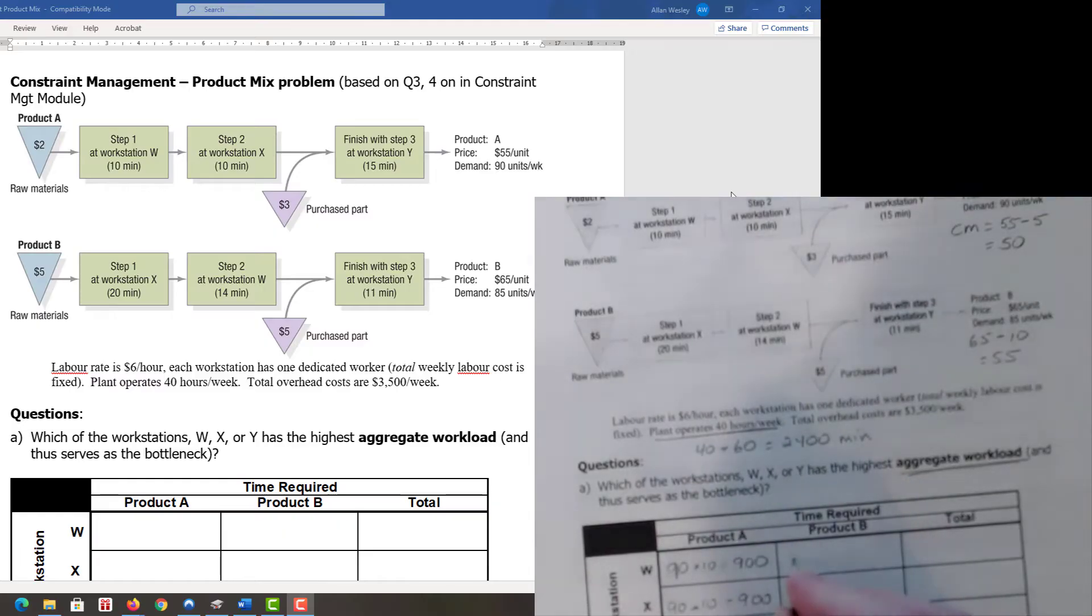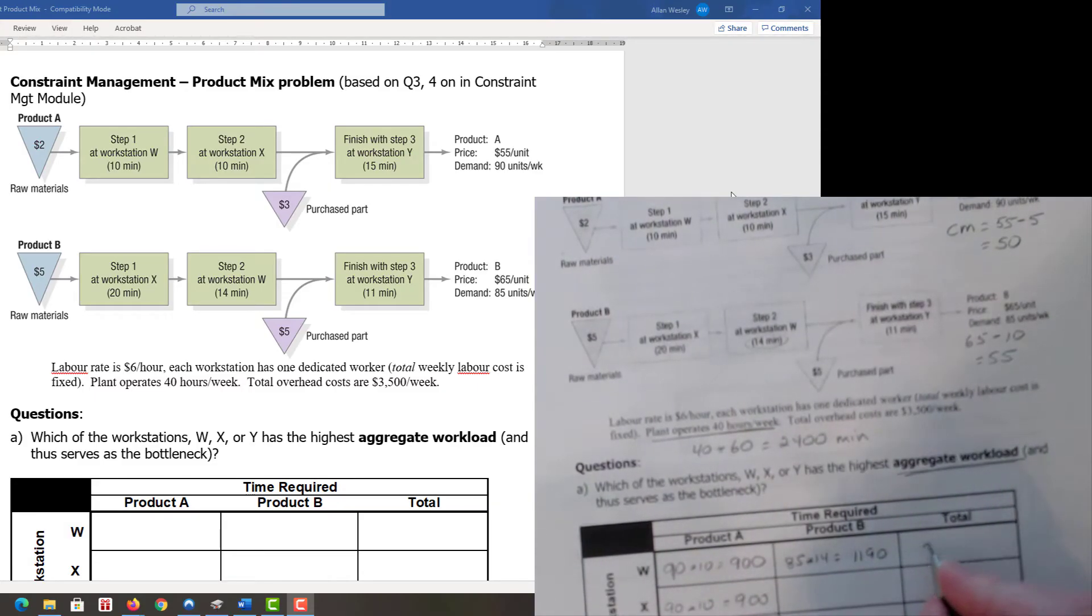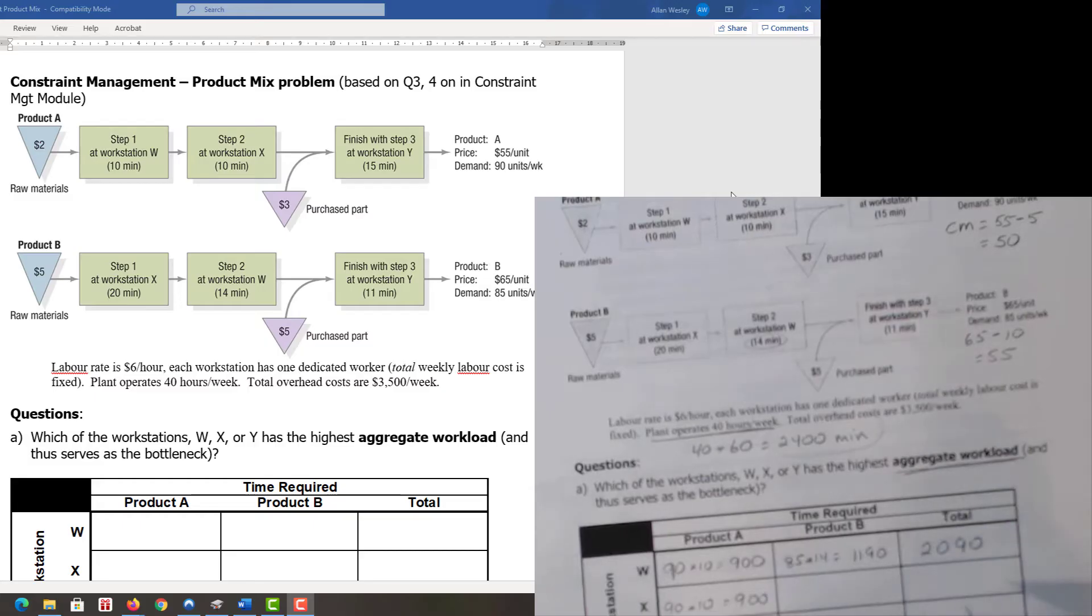Product B sells 85 units. At workstation W, it's 14 minutes, so 85 times 14 equals 1,190 minutes. If I add those up, I get 2,090 total. I have 2,400 available and use 2,090, so workstation W is not a binding constraint.